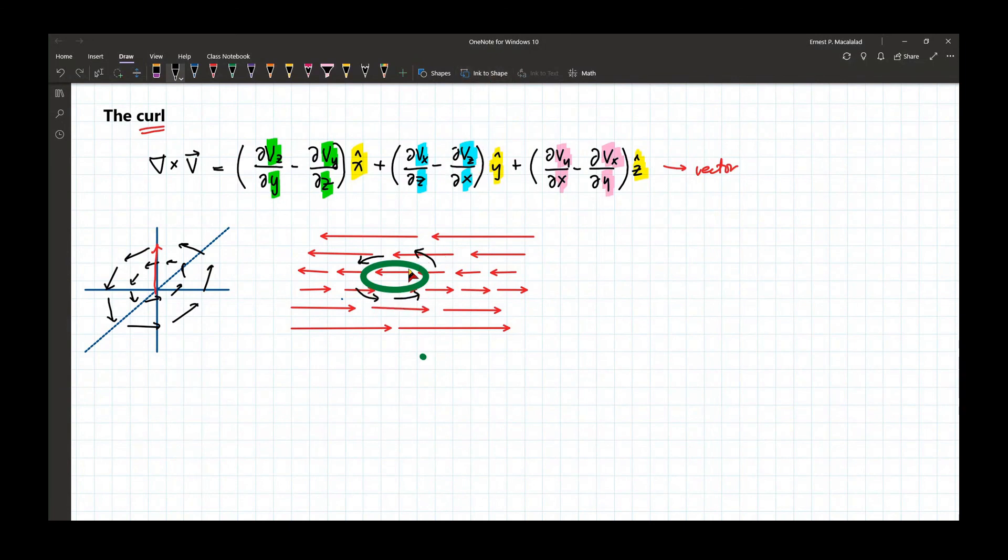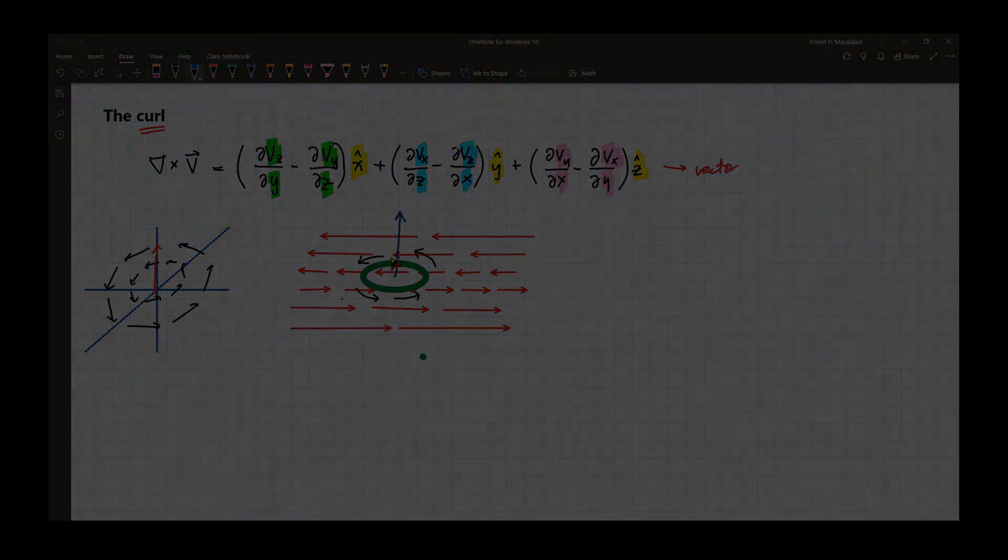Do you imagine? While the vector itself does not curl like this, but if you place something on this field, that something will actually turn. So this is an example of a curl, and the direction of the curl is also positive.